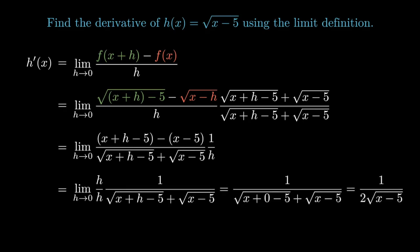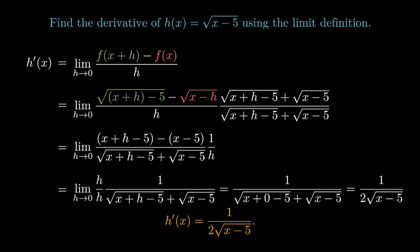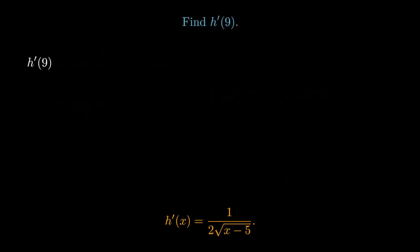After the simplification, we may evaluate the limit at h = 0 without producing an undefined value, and h'(x) = 1/(2√(x-5)), which may also be evaluated at any value of our choosing.